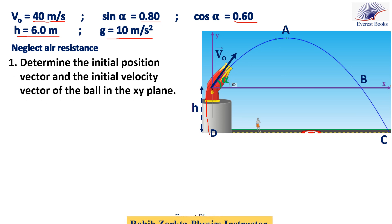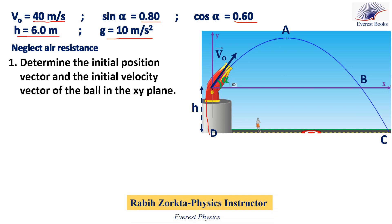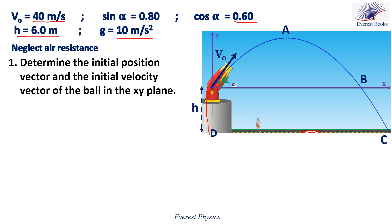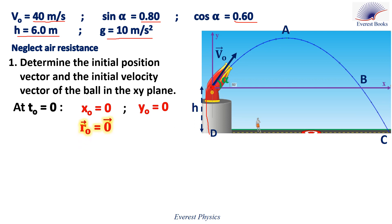Number one: determine the initial position vector and the initial velocity vector of the ball in the x-y plane. At time 0, since the ball starts from the origin O, then x(0) and y(0) equals 0. Therefore, r(0) equals 0.